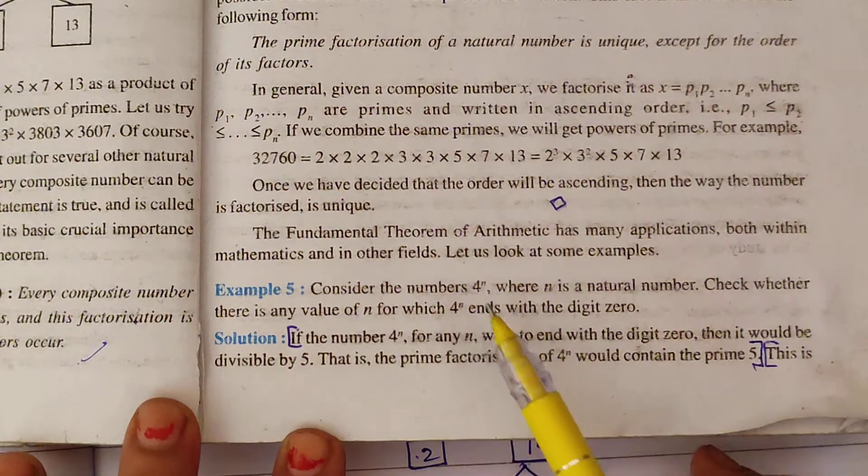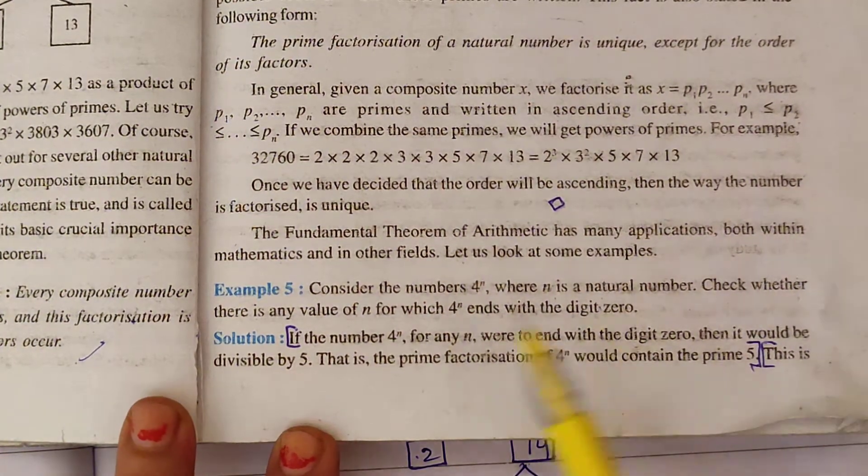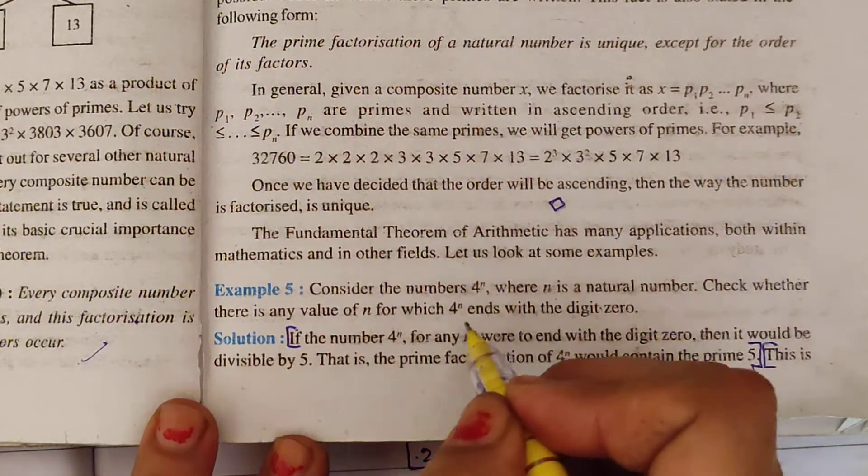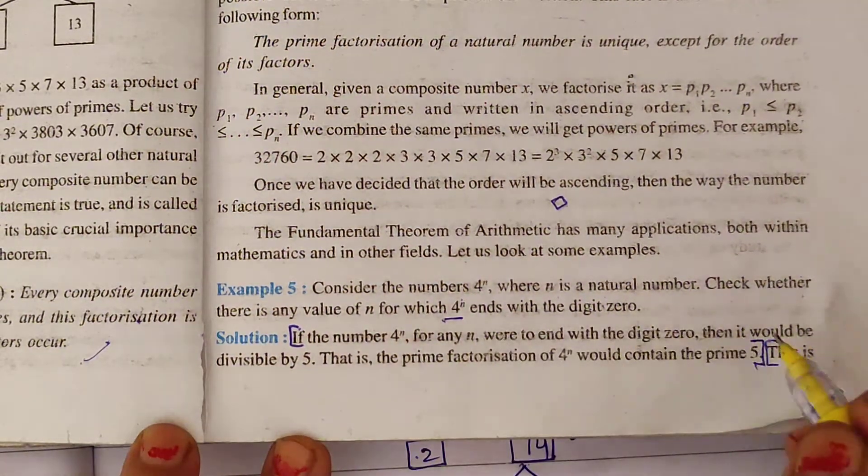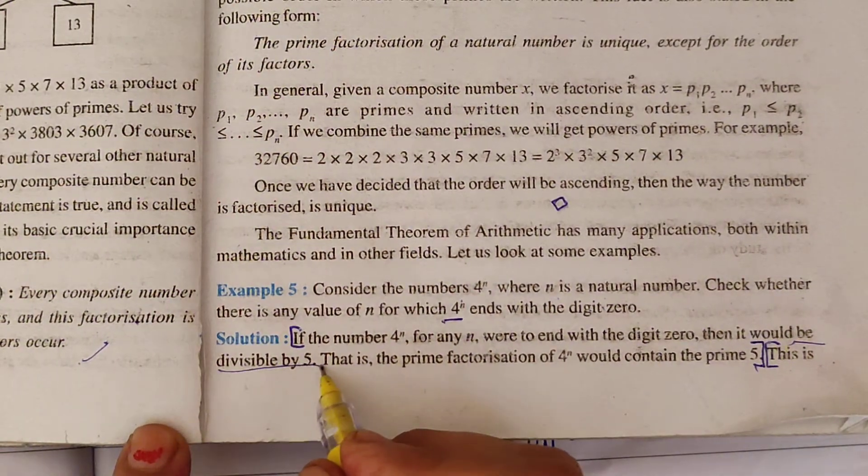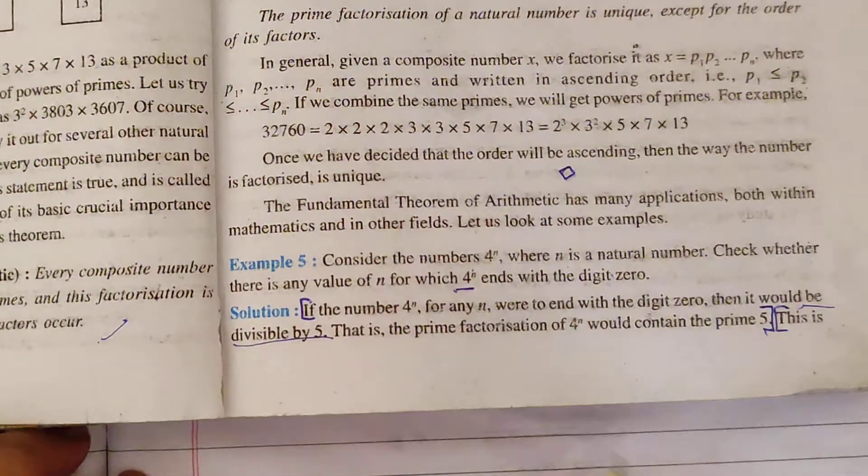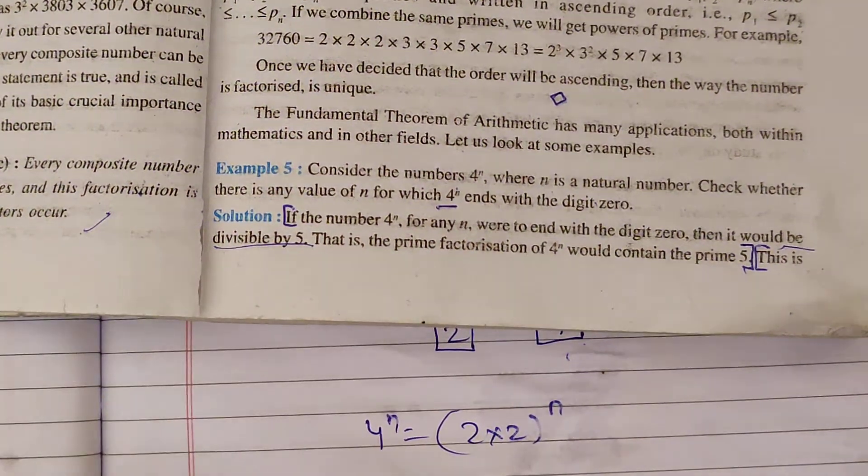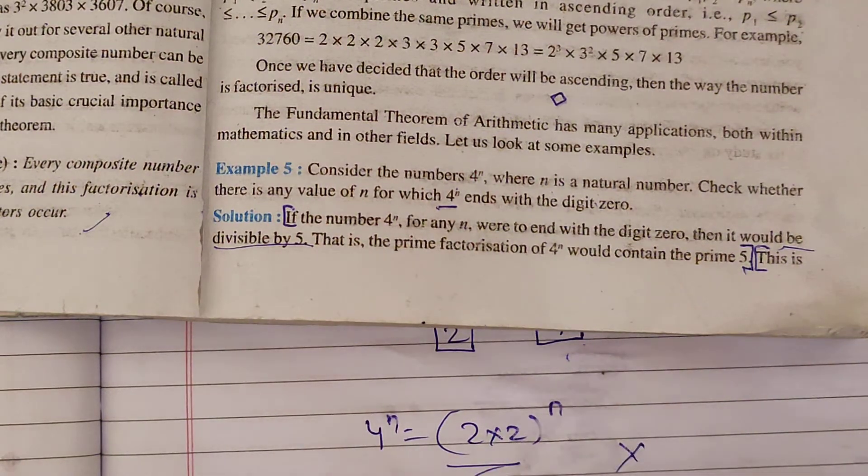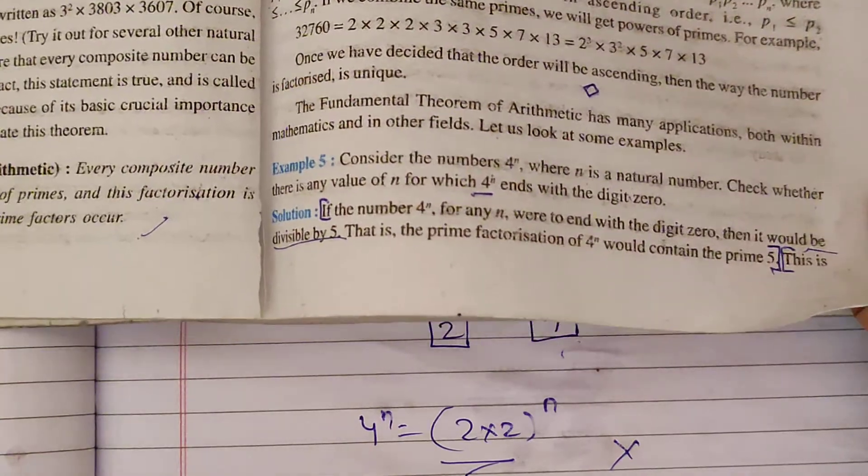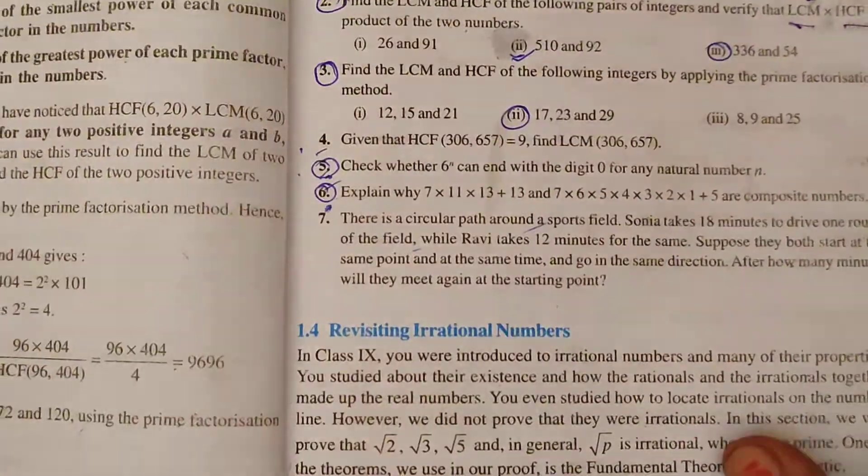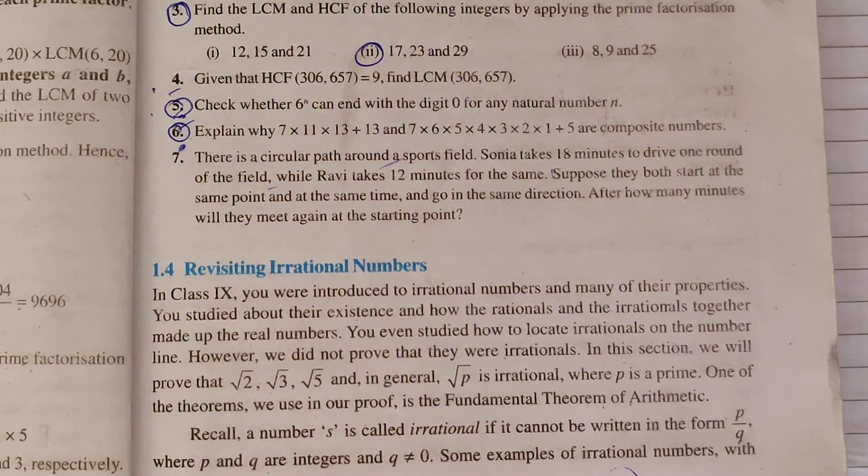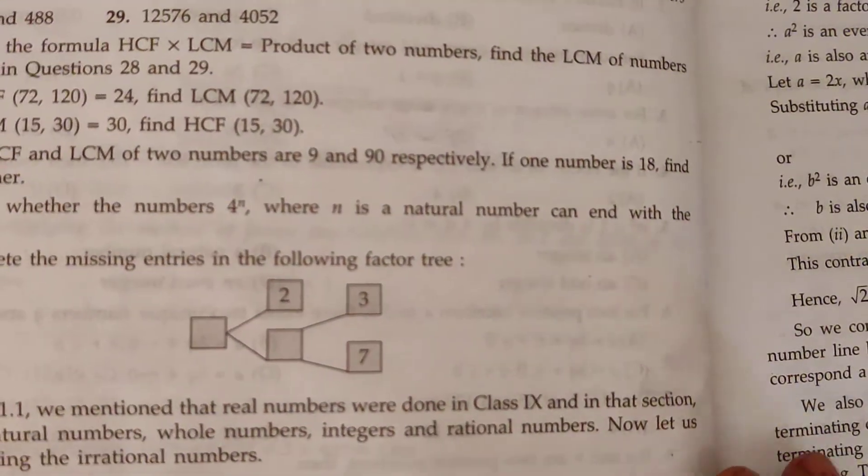And we have some questions. Example number 5: Consider the number 4^N where N is a natural number. Check whether there is any value for N for which 4^N ends with the 0, or not. So the most important test is that the number 5 must be a factor. What do we do? Students, we have to take 4^N. We have to factorize: 2 raised to power 2N. So this number is not divisible by 5 because it is not 5 in the factorization, so this never ends with 0.